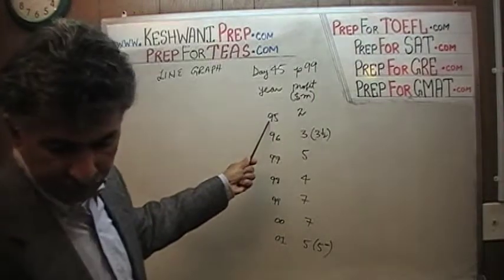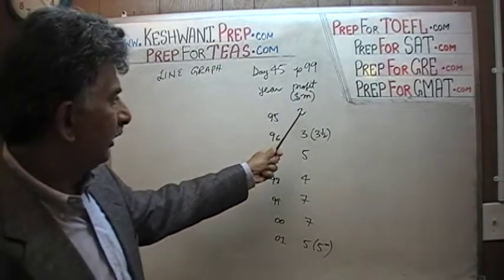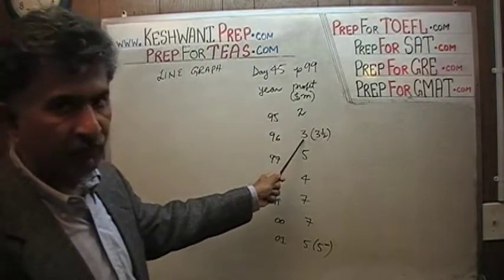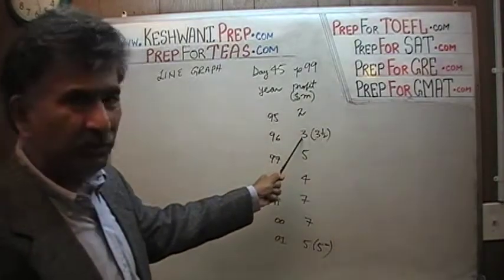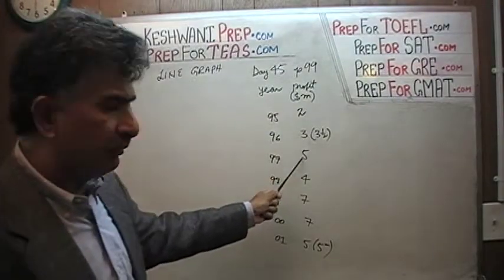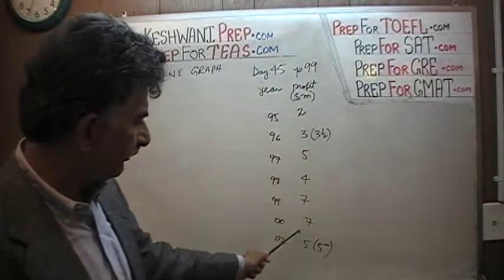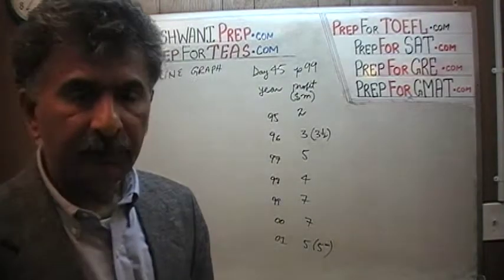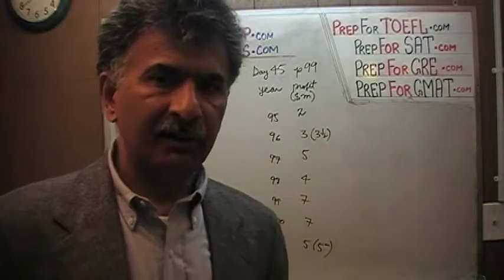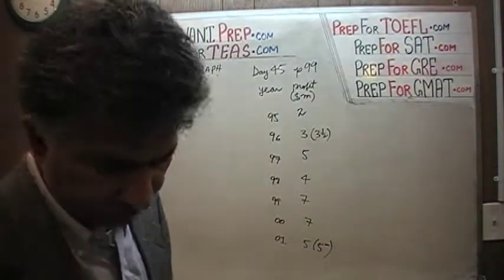If you look carefully, it shows there the profit: in year 95, they show a profit of 2 million. In 96, they show a profit of about 3.5 million — I'm going to pretend it is 3 million just to keep our math simple. In 97, we had a total profit of 5 million. In 98, we had 4. In 99 and 2000, we have 7. And finally, last year they show us a profit of slightly under 5 million dollars, which I'm going to pretend is 5 million just to keep our math simple.